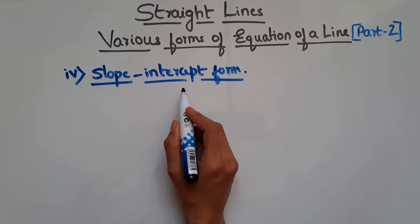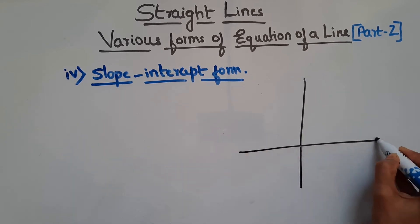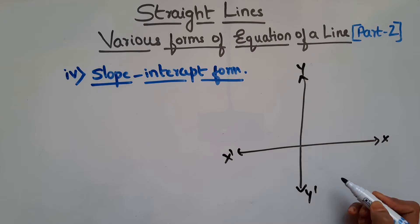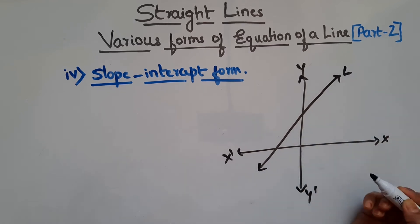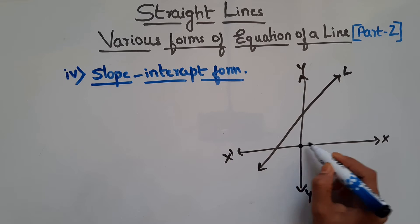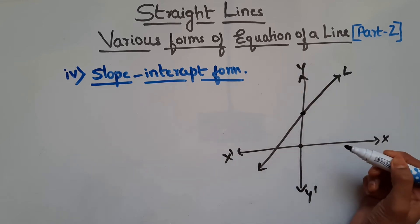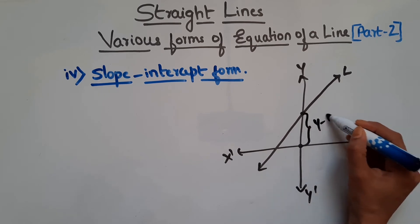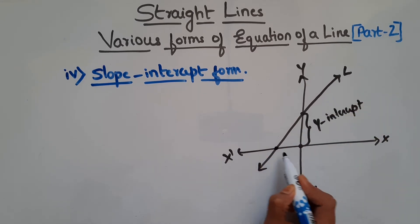When slope and intercept of a line is given, then how to find the equation of a line? So we know slope — what is intercept? For that, let us say we have the x-axis and the y-axis. Let us consider a line L. So intercept is nothing but it is the distance from origin to the point where this line cuts on the axis. So this line cuts on the y-axis at this point, and this distance is called the y-intercept. So this line cuts on the x-axis at this point, and this distance is your x-intercept.